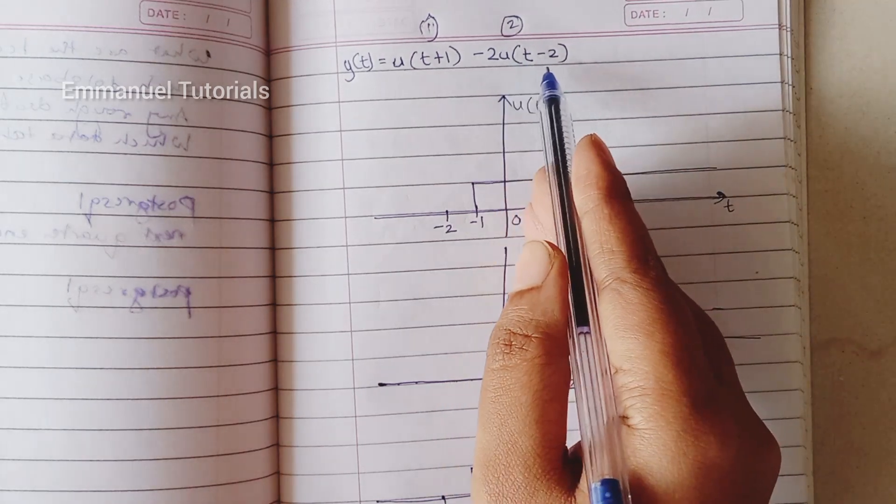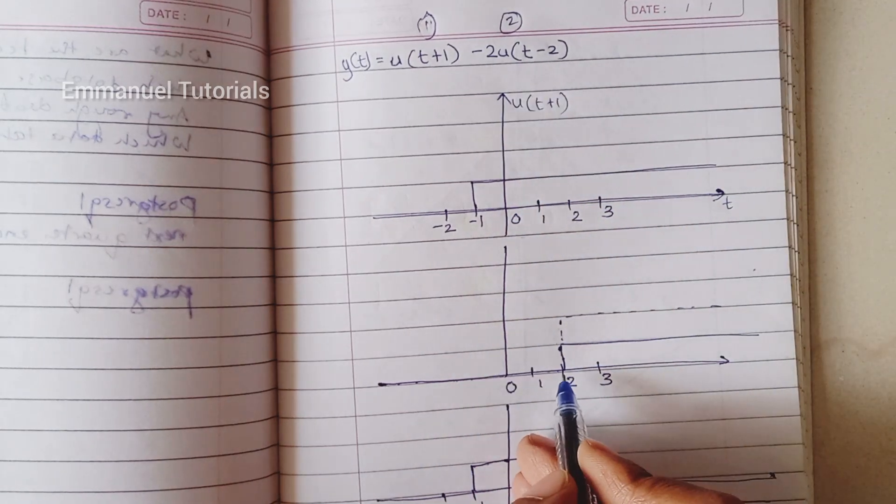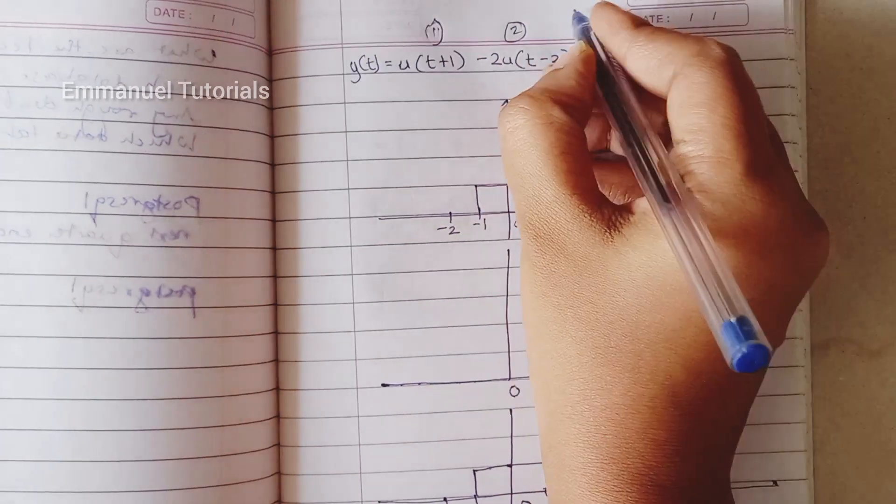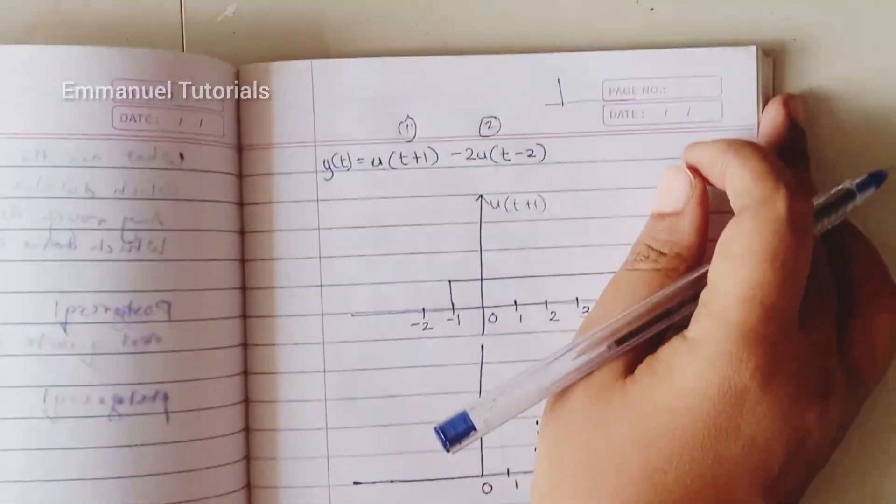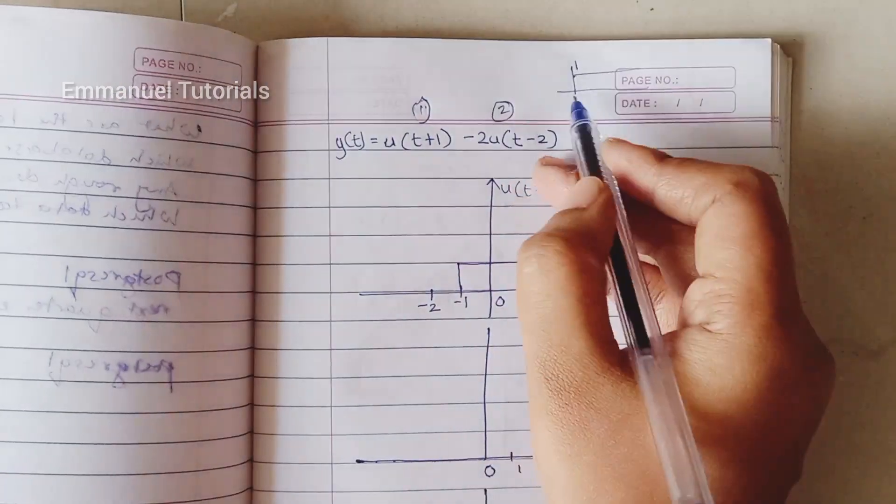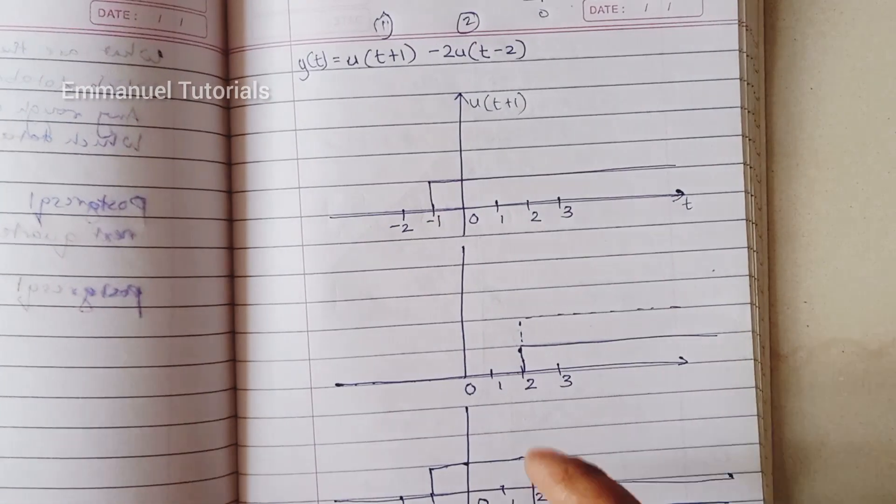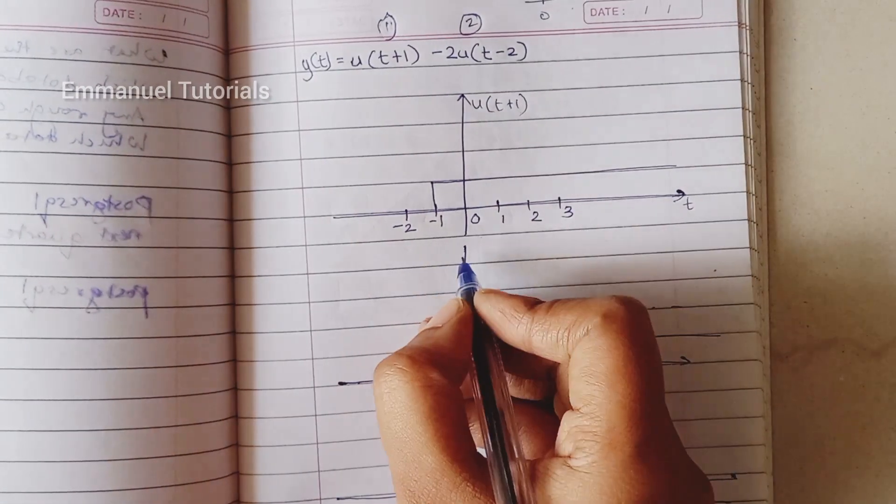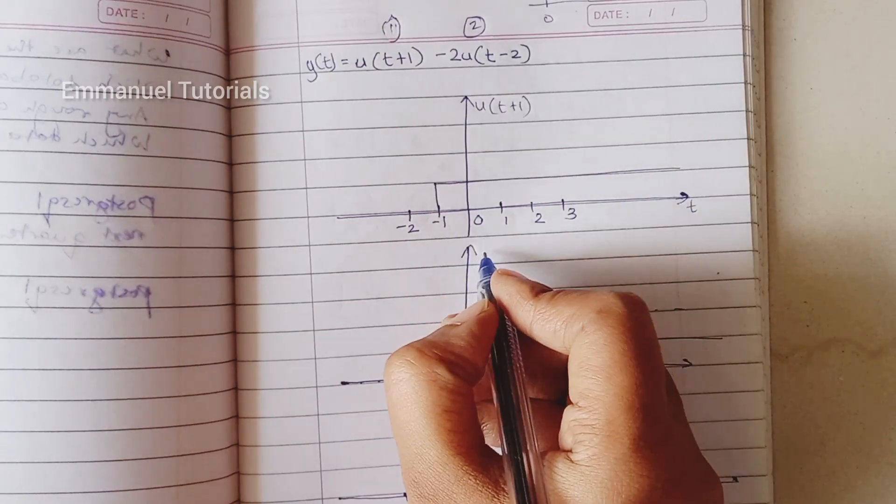Similarly for 2u of t minus 2, first I have drawn the u of t minus 2, which is a delayed version of the unit step signal. So unit step signal starts from 0 with amplitude 1. Now we are shifting it by 2 to the right, so we will have this kind of a signal with amplitude 1 from t equal to 2.